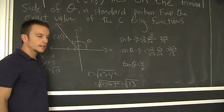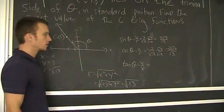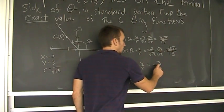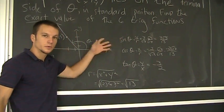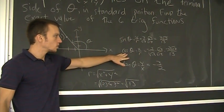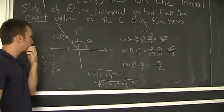And now for the tangent. That one's easy. y over x. y over x. 3 over negative 2. Negative 3 halves. Okay? You'll notice the sine is positive, which it always is in the second quadrant. Cosine is negative, which it always is in the second quadrant. And tangent is also negative.